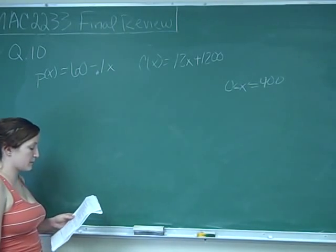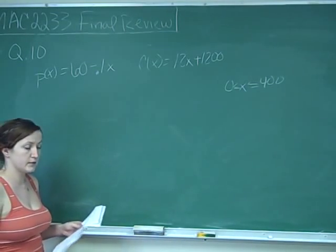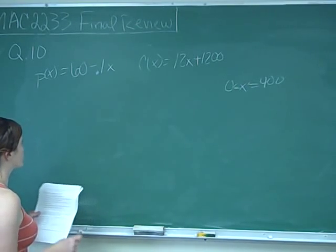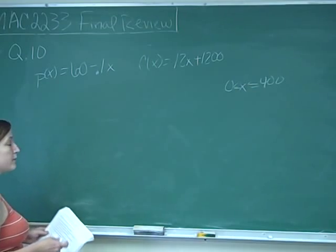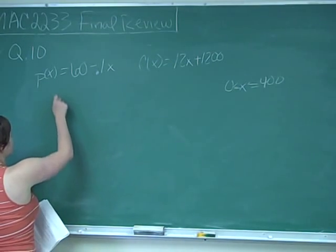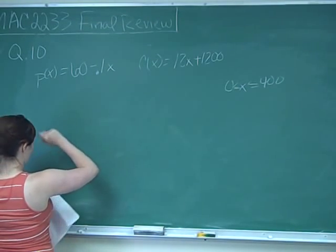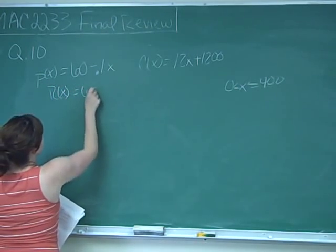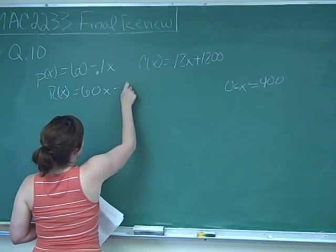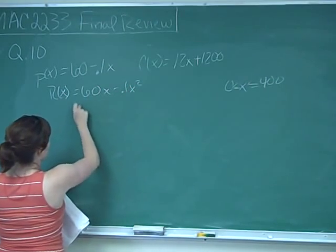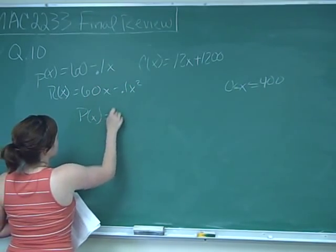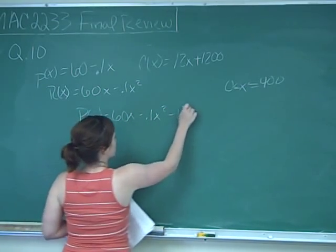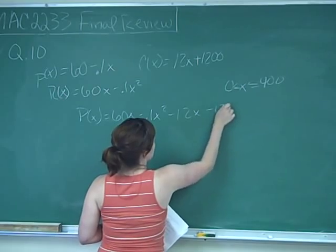Statement A says the profit from the sale of 100 items is $2,600. Profit equals revenue minus cost, and revenue is demand times X, so our revenue equation is 60X - 0.1X². Therefore, our profit function is equal to 60X - 0.1X² - 12X - 1,200.